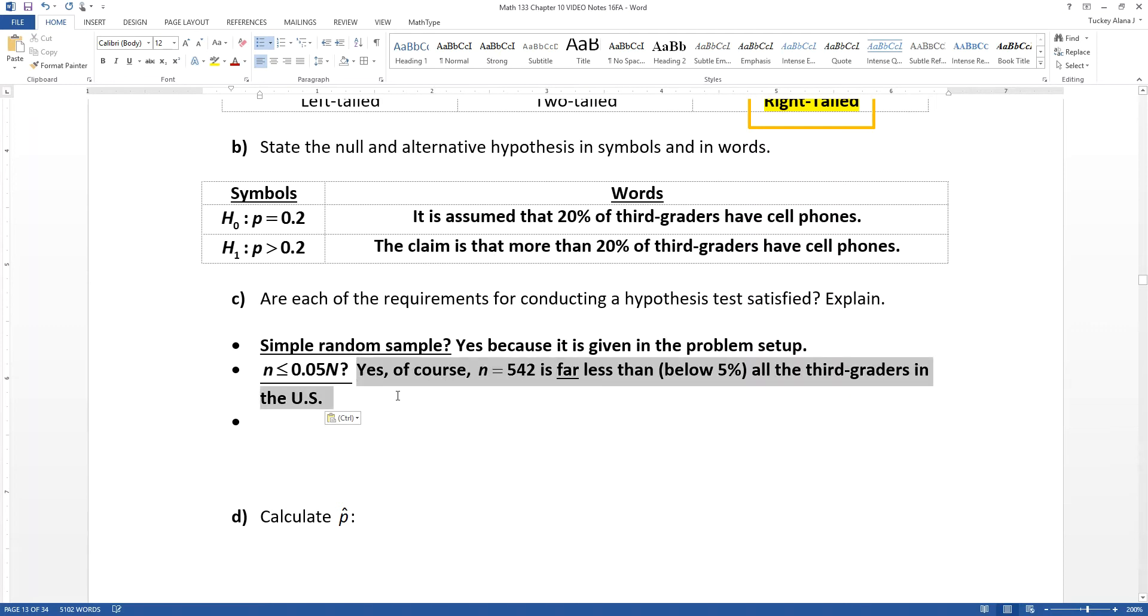But we can kind of assume that 542 is far less than five percent of all those third graders. Heck, it's probably less than five percent of all the third graders in my state of Michigan, let alone the whole of the U.S. So we're waving our hands out a little bit because we don't actually know capital N, the population size, but we know that that population size must be quite large.